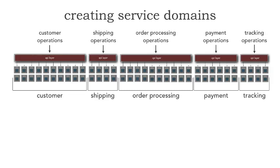So now when we run the documentation, if I want to know what tracking operations there are, I go to a single API and a single API documentation. This is a good first step. But let me show you another technique that I typically use for identifying service domains, which is very similar to what I introduced in the prior lesson, lesson 33, on creating a service taxonomy.